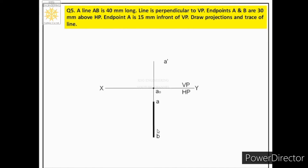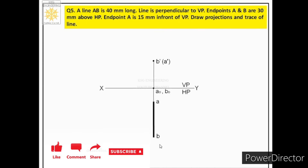We draw true length for the top view because both endpoints A and B are 30 mm above HP, meaning the line is parallel to HP, and a line parallel to HP projects as true length on HP. Now for the front view: since the line is perpendicular to VP, its projection on VP is a point. We make that projector end bold. When looking from the front, B is seen first and A is behind, so we label the front view as B'(A') with A' inside brackets.